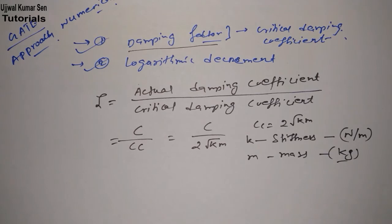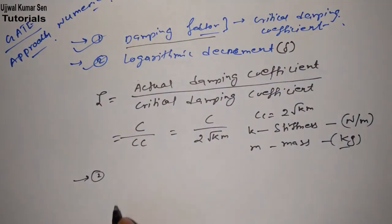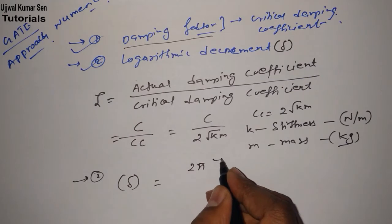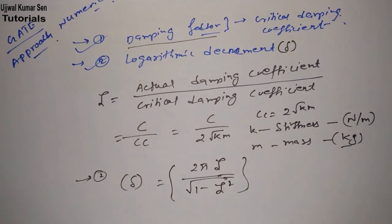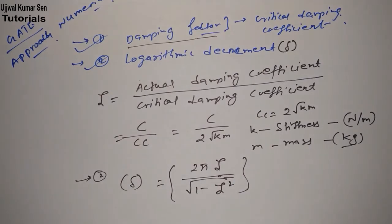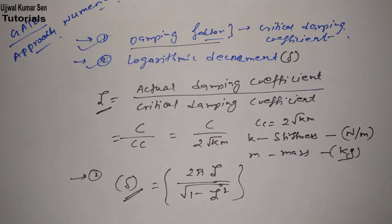Now next topic is logarithmic decrement. It is denoted by delta and delta equals 2 pi zeta divided by square root of 1 minus zeta squared. Can you understand this relation between damping factor and logarithmic decrement? Understanding the formula first is most important before going to solve numerical problems in any topic. These days I am creating a lot of videos related to gate problems.